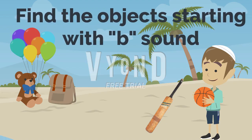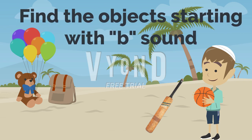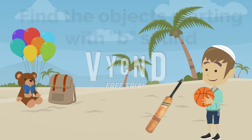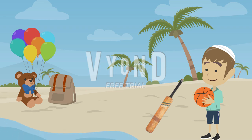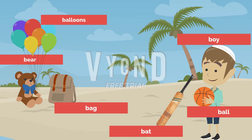Can you find the object starting with the B sound? You are right! B — Balloon B. Bear B. Bat B. Ball B. Boy.